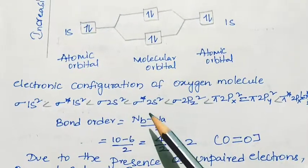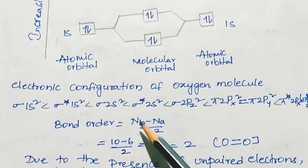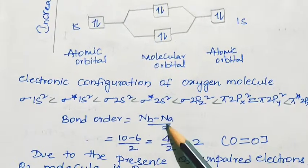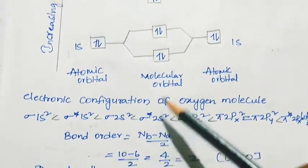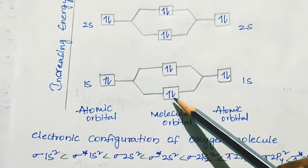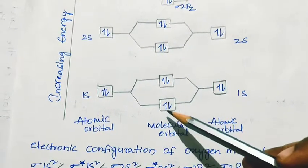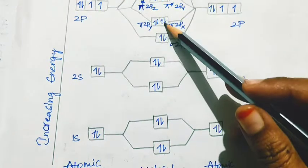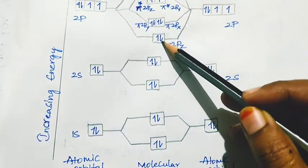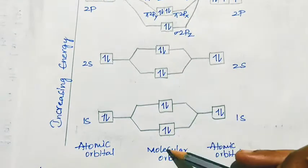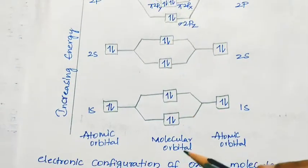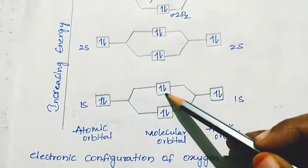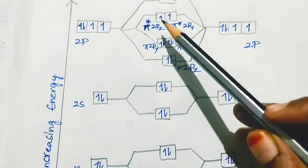Bond order = (number of electrons in bonding MO − number of electrons in anti-bonding MO) / 2. Electrons in bonding orbitals: 2 plus 2 is 4, plus 6 gives 10. Electrons in anti-bonding orbitals: 2 plus 2 is 4, plus 2 gives 6.